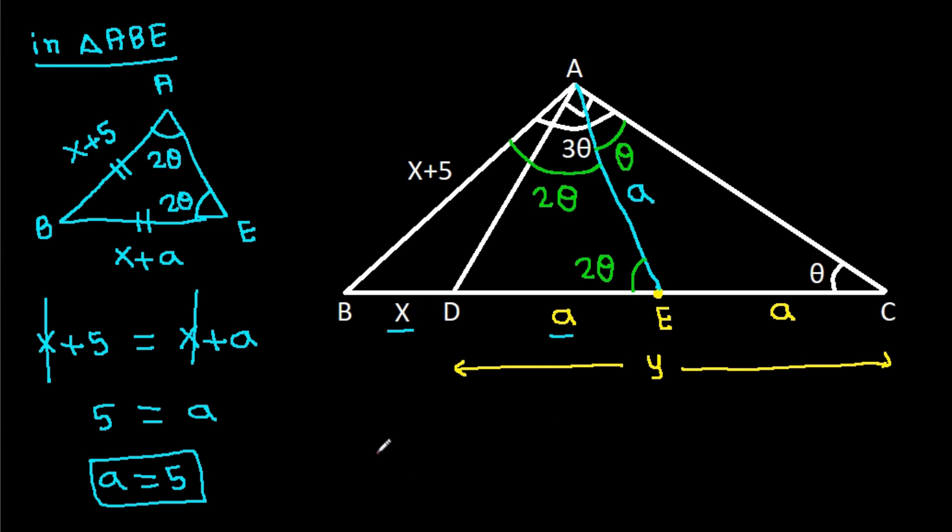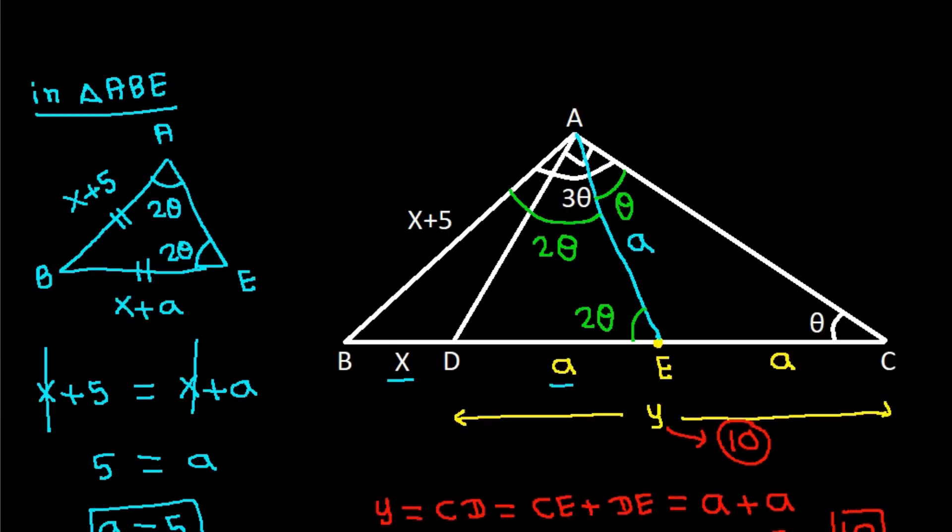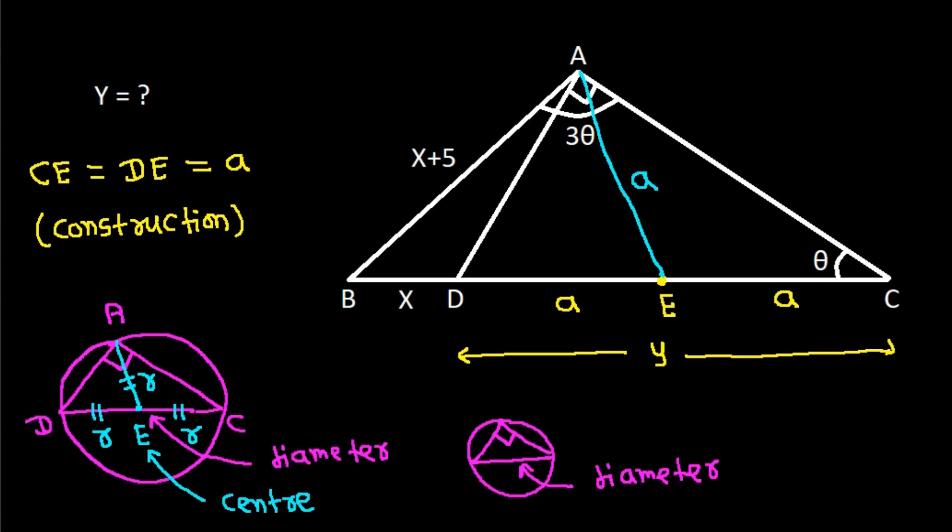Now, y is CD, that will be CE plus DE, and CE is a plus DE is a, and a is 5 plus a is 5, that will be 10. So y is 10.